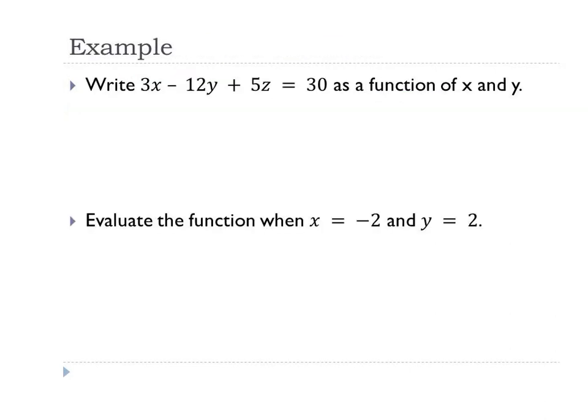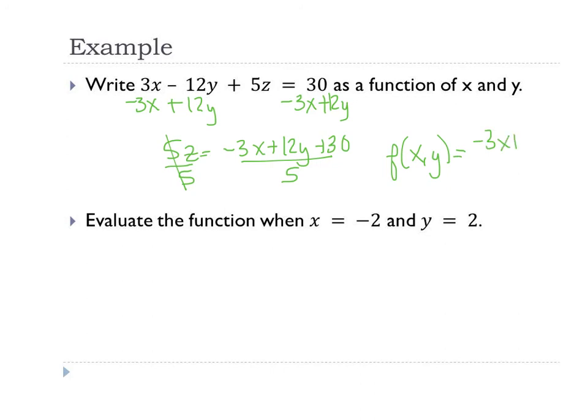Okay, so write 3x - 12y + 5z = 30 as a function of x and y. So we said solve for z, so let's get rid of x and y. Okay, so 5z equals -3x + 12y + 30, and we're going to divide everything by 5. So let's just write f(x, y) = (-3x + 12y + 30)/5. Okay, there is my function of two variables.